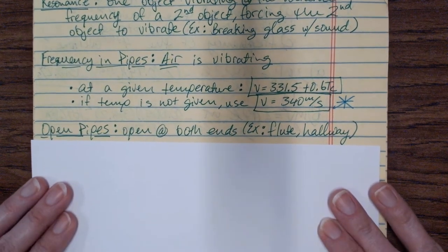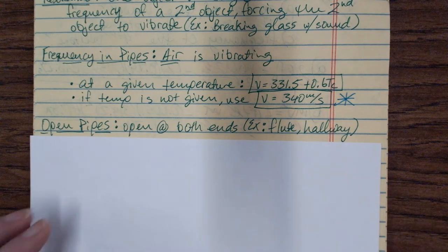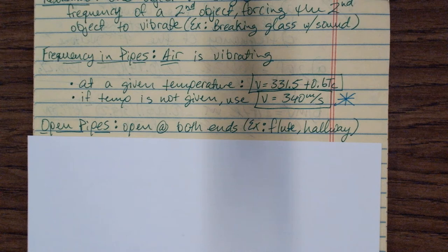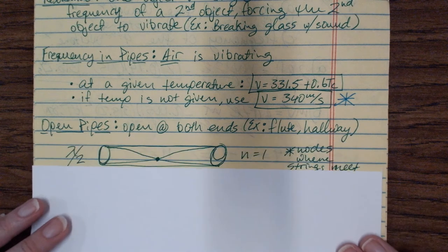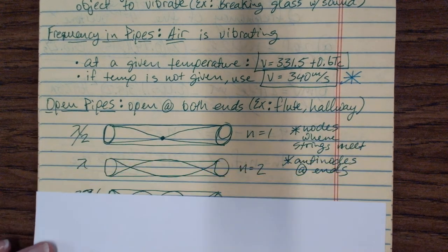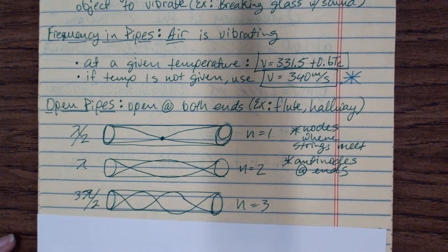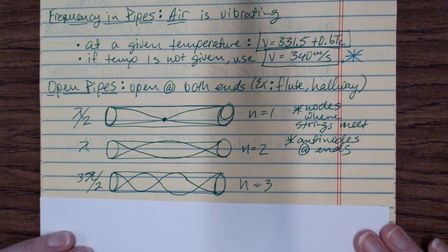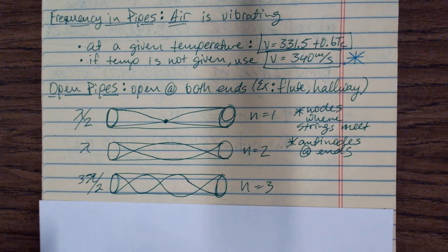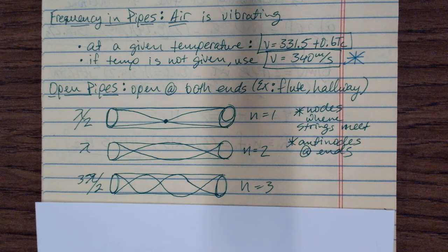So, different types of pipes: we have open pipes and closed pipes. Open pipes are open at both ends — like a flute, a hallway, or a tunnel. There are pictures of these on a document I'll post on Canvas for April 16th, showing a side-by-side comparison of strings, open pipes, and closed pipes.